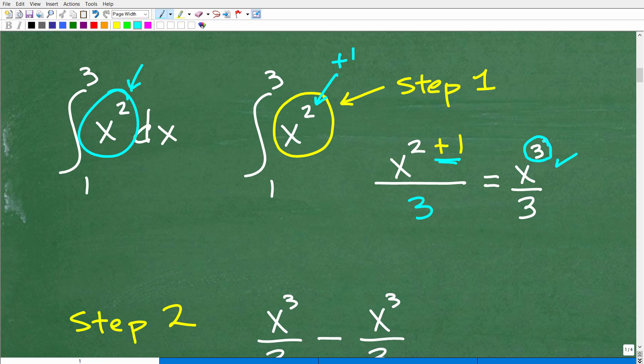Now, whatever this answer turned out to be, 2 plus 1 is 3. We're going to divide x cubed by the answer. Okay, so that's how this works. So x squared, we're going to add 1. The result is 3. We're going to divide by 3. So we're going to end up with x to the third power over 3.